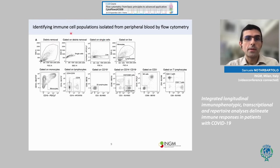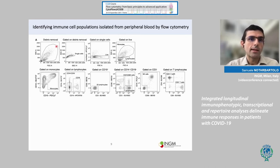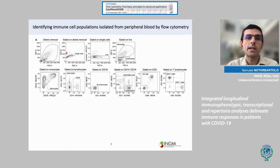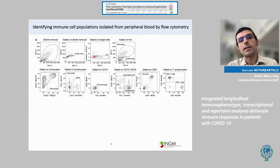First, we wanted to identify the main immune cell populations in peripheral blood, exploiting flow cytometry. As you have probably heard many times during the course, you can use physical parameters — forward and side scatter — to gate on your cells and eliminate debris. There are different strategies to identify single cells and eliminate doublets; we normally use the height against the width of the side scatter. Then for a cleaner analysis, we also stain with a live/dead dye and gate on live cells.